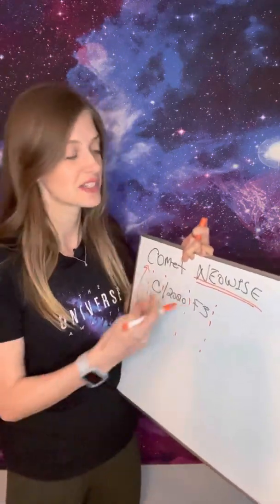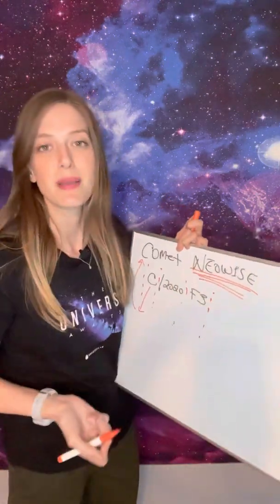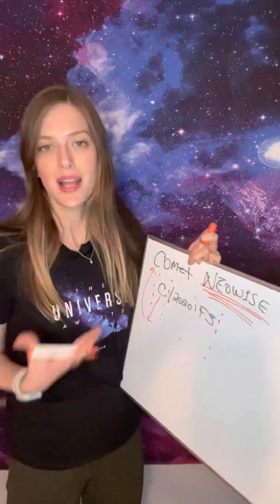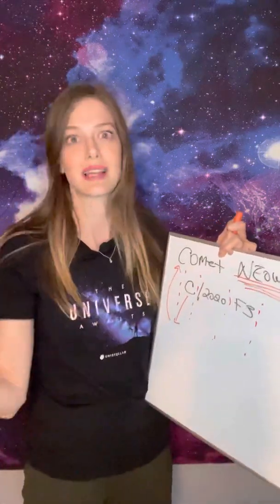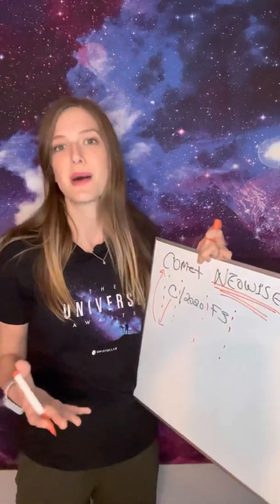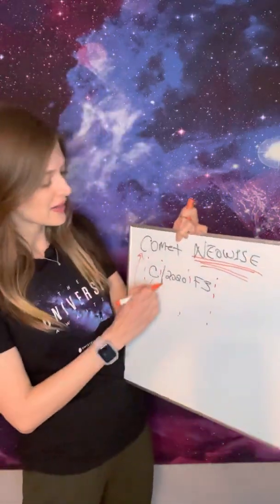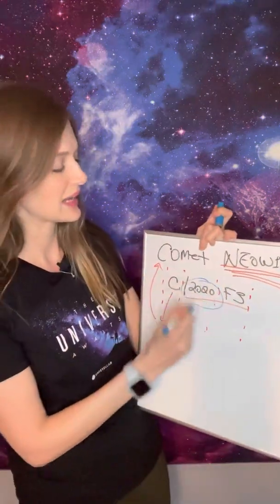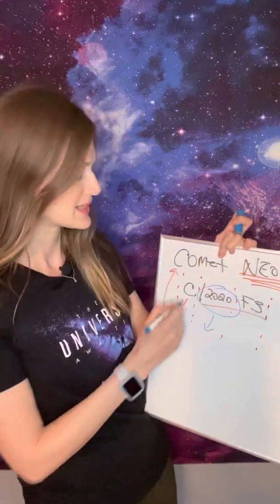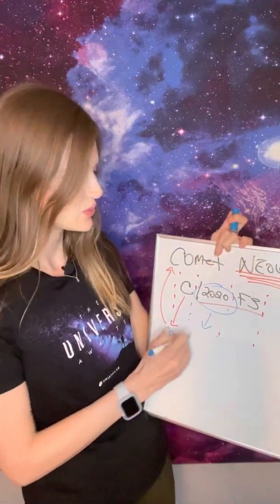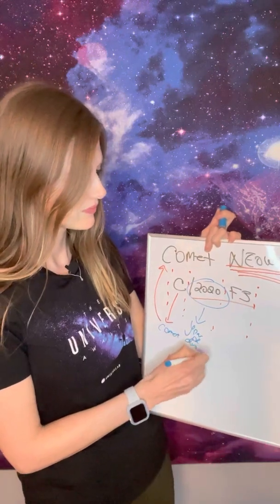A comet is either named after a person or the spacecraft that discovered it. The problem is that the NEOWISE space probe has discovered a ton of different comets — so how do we tell them apart? That's where the year comes in: 2020 stands for the year in which the comet was discovered.